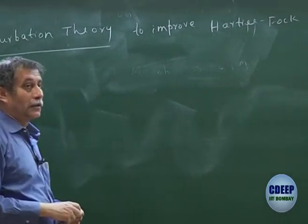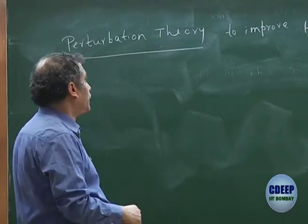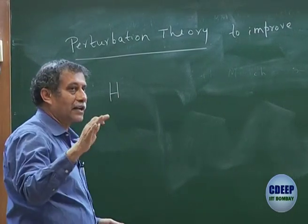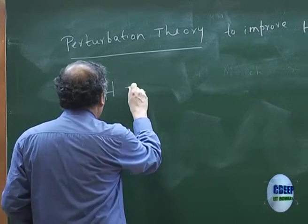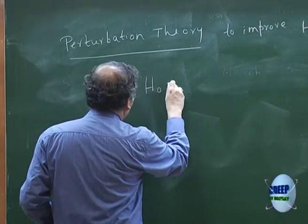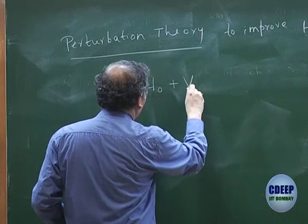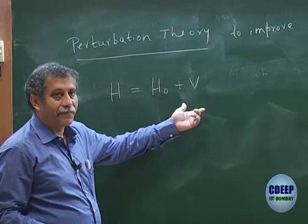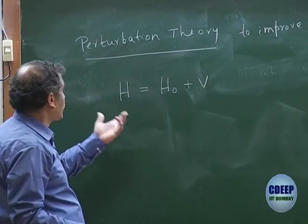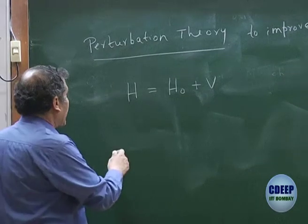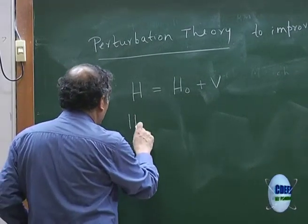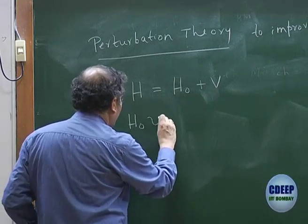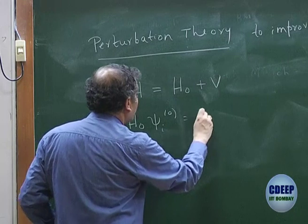To improve Hartree-Fock for the many-electron problem — I just want to revise perturbation theory very quickly. I will not go through the order analysis right now, but let me tell you how perturbation theory starts. It starts with a separation of the Hamiltonian into what is called a zeroth-order Hamiltonian and the rest. The idea of a zeroth-order Hamiltonian is that its entire solutions — let us say I am calling it ψᵢ⁰ — must be known.